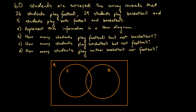The overlapping sliver in both F and B represents students who play both football and basketball. We're told 5 students play both, so we put 5 in that intersection. We're also told 26 students play football total. Since 5 of those also play basketball, the football-only region is 26 minus 5, which equals 21 students. So 21 play football only, and 5 play both, giving 26 altogether.